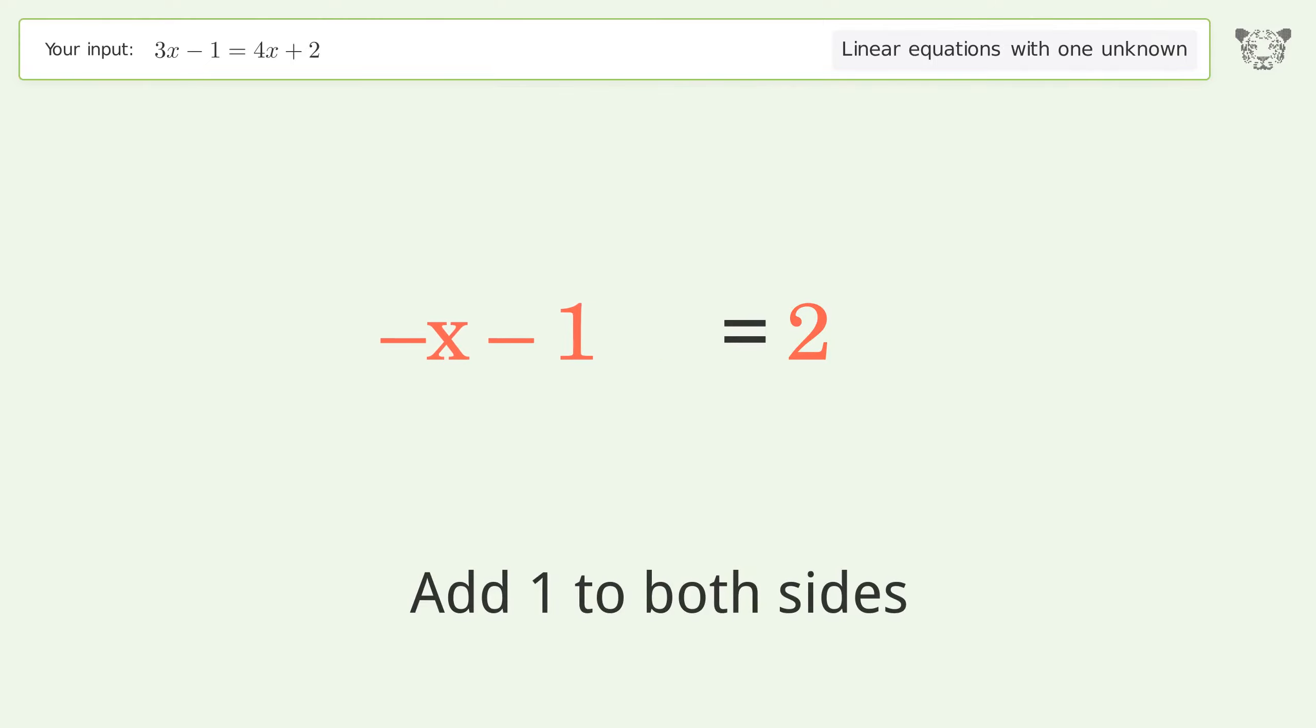Group all constants on the right side of the equation. Add 1 to both sides. Simplify the arithmetic.